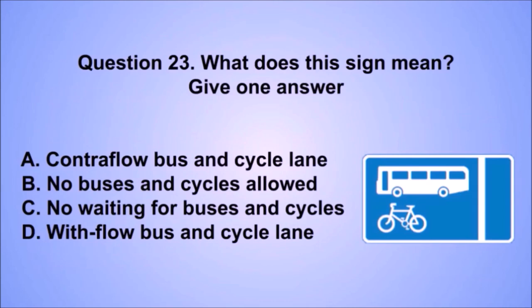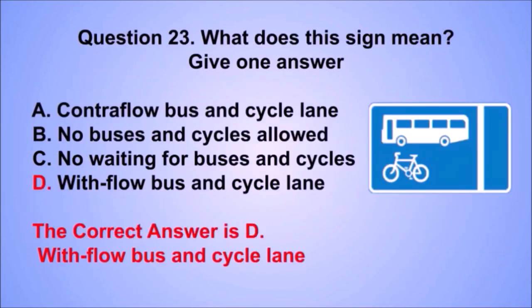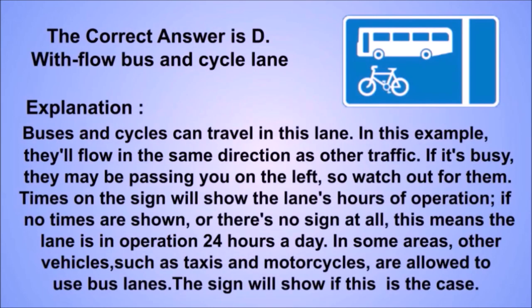Question 23. What does this sign mean? The correct answer is D: With flow bus and cycle lane. Buses and cycles can travel in this lane, flowing in the same direction as other traffic. If it's busy, they may be passing you on the left, so watch out for them. Times on the sign show the lane's hours of operation; if no times are shown, the lane is in operation 24 hours a day.